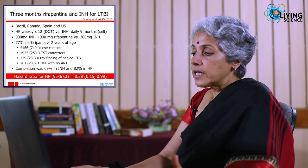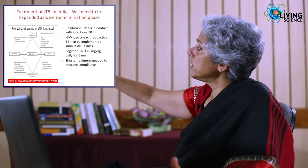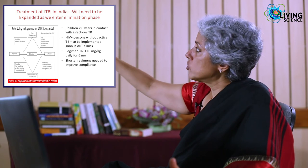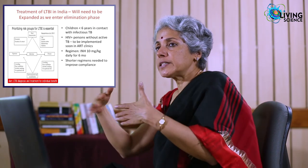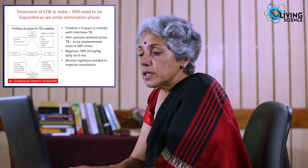Latent infection is treated in low-endemic countries like the US with isoniazid for six months or nine months. A newer regimen — rifapentine plus isoniazid once weekly for just twelve doses — is found to be as effective if not more effective than six months of isoniazid and is a very attractive approach. In India currently, latent TB treatment is offered only to children under six years and HIV-positive people, because they are at high risk for developing active disease.